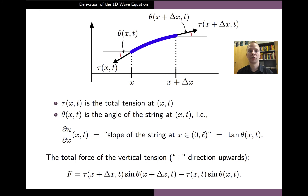To get to the vertical components of the tensions, we denote by tau the total tension at a point x and at time t. This tau is the scalar total magnitude of the tension at both coordinates x and x plus delta x. The direction of the tension is along the tangent of the string at that point, and these directions are given by the angle theta that the tangent of the string makes with the horizontal direction. We also know that the tangent of this angle gives us the slope of the string at this coordinate, which in turn is equal to the partial derivative of the displacement with respect to x at these coordinates.